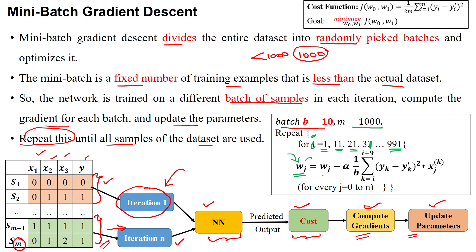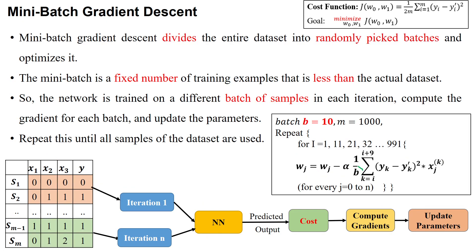The parameter update formula is: new w = old w minus alpha (learning rate) multiplied by (1 divided by the mini-batch size). For 10 samples per batch, the index k runs from i to i plus 9 — so if i equals 1 then k goes 1 to 10, if i equals 11 then k goes 11 to 20, and so on. We sum the actual output minus predicted output squared, times the feature value associated with w, over those k samples. This average over the mini-batch is applied to update each parameter.